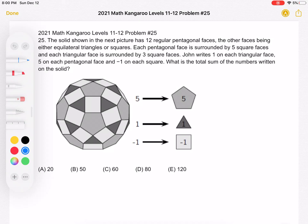The solid shown in the next picture has 12 regular pentagonal faces, the other faces being either equilateral triangles or squares. Each pentagonal face is surrounded by 5 square faces.